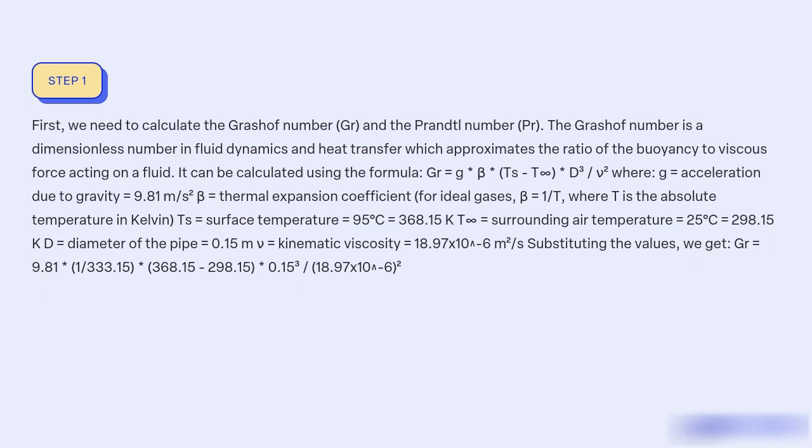We get Gr = 9.81 × (1/333.15) × (368.15 - 298.15) × 0.15³ / (18.97×10⁻⁶)².